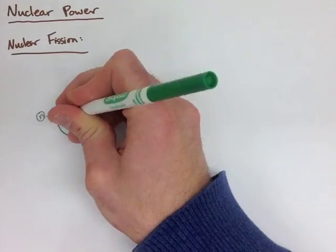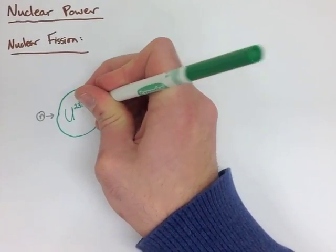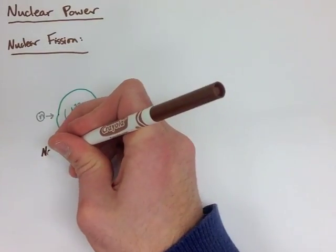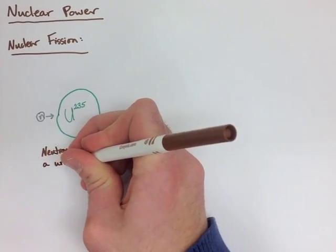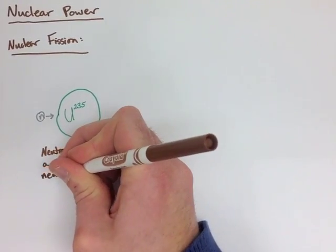The way we're going to do this is we're going to take a neutron and we're going to shoot it into a uranium nucleus. The neutron strikes the nucleus, making it extremely unstable.